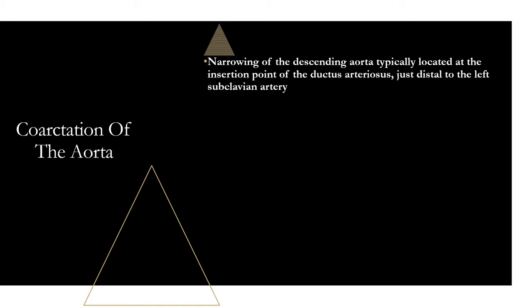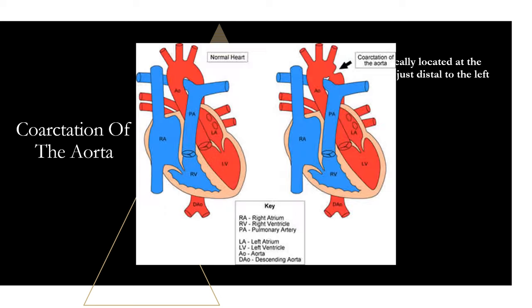Coarctation of the aorta does not start with a T, so it is non-cyanotic unless otherwise stated. This is just a narrowing of the aorta, typically located at the insertion point of the ductus arteriosus, just distal to the left subclavian artery — which will be important for the physical exam findings. This is what it looks like: you have the aortic arch, the branches coming off it including the left subclavian, and then this narrowed portion of the aorta.